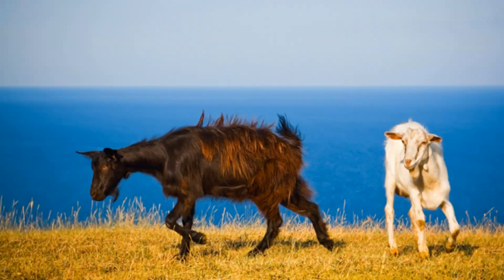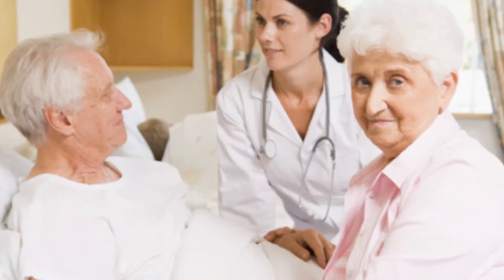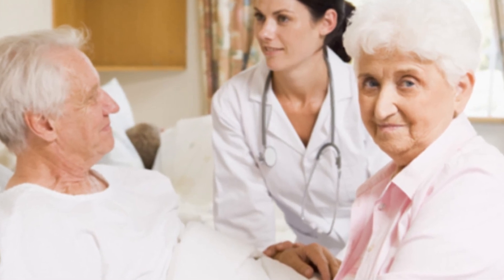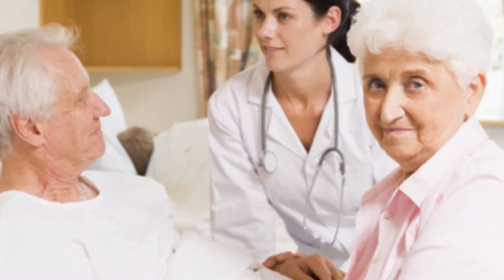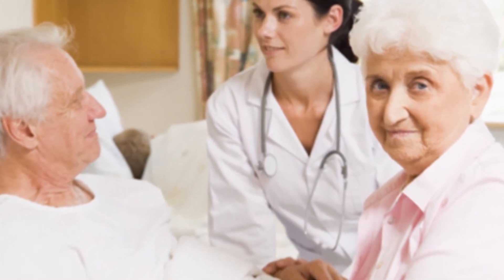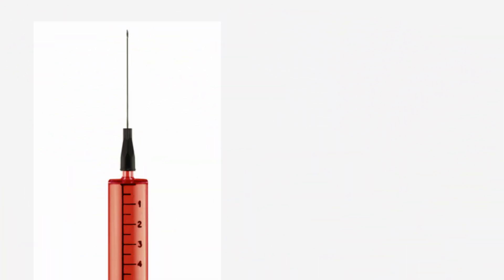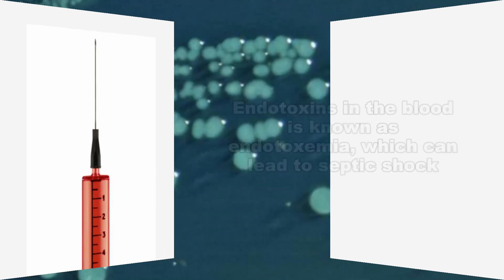All mammals can be affected by endotoxins. Severe reactions include fever, decreased blood pressure, inflammation, and coagulation in humans has been associated with exposure to these toxins. The presence of endotoxins in the blood is known as endotoxemia, which can lead to septic shock.